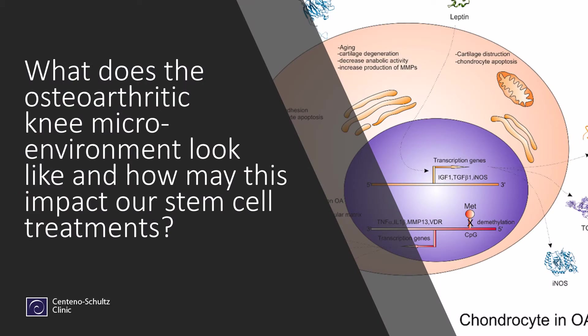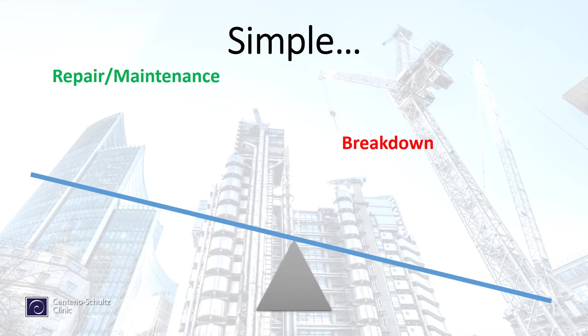What does the osteoarthritic knee microenvironment even look like, and how may this help impact our stem cell treatment? Is it possible that we could dial it in so that more patients would respond better? If we look at the knee microenvironment — meaning what's inside the soil — we have two things going on: repair and maintenance on one side, and breakdown on the other.